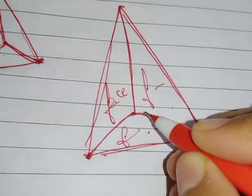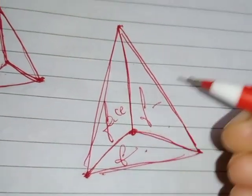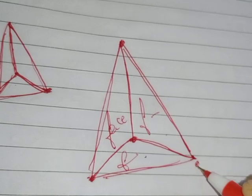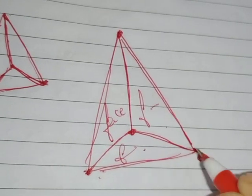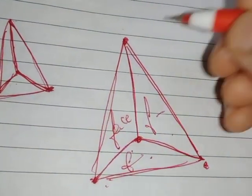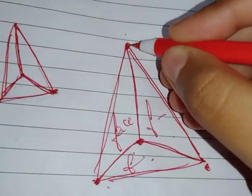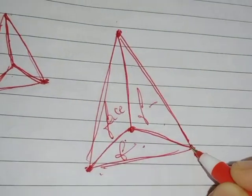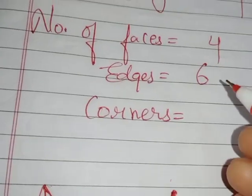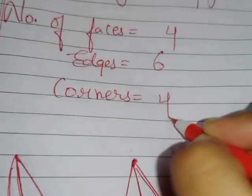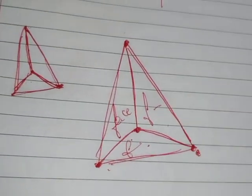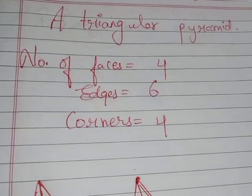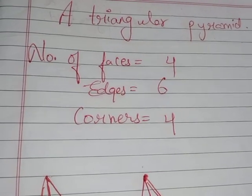Now the number of corners — corners means the vertex, the joining point. All these joining points are known as the vertex. One, two, three, and four — these four joining points where two line segments meet are known as vertices. So there are four corners in the triangular pyramid.